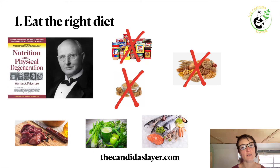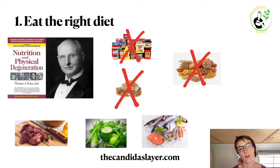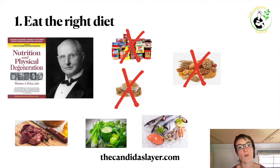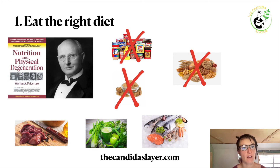How can you heal SIBO? Number one, you have to eat the right diet. Eliminate completely all processed foods, including all alcohols, beers, and stuff like that.